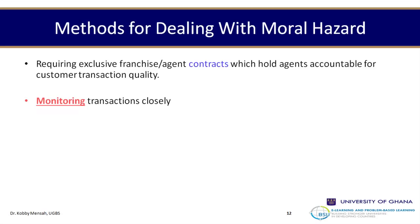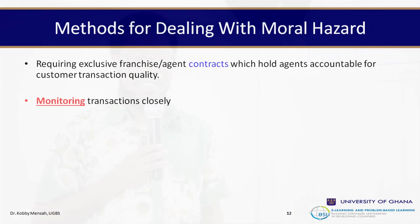Monitoring is another method — constantly monitoring transactions closely. Sometimes you may want to do random checks without the agent necessarily knowing you're going to do that. It puts people on their toes when they know there are random checks and they don't know which account the company will pick up to observe or monitor. Monitoring is a very good method of checking moral hazards.